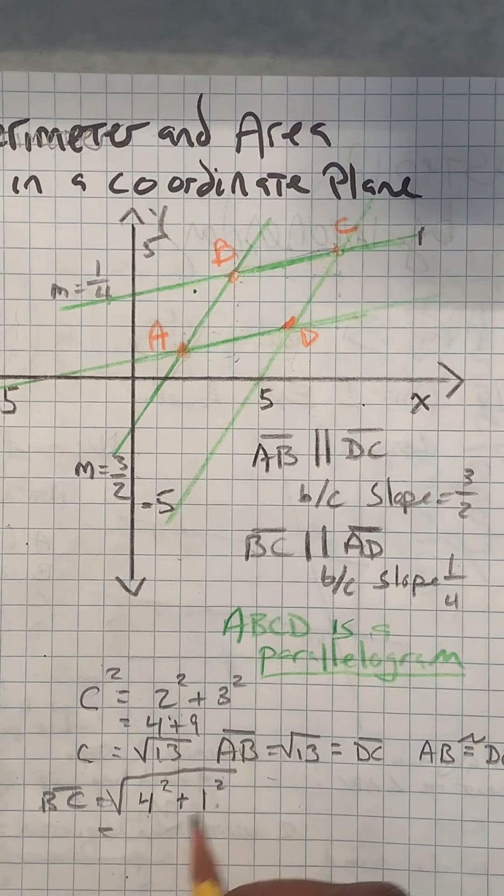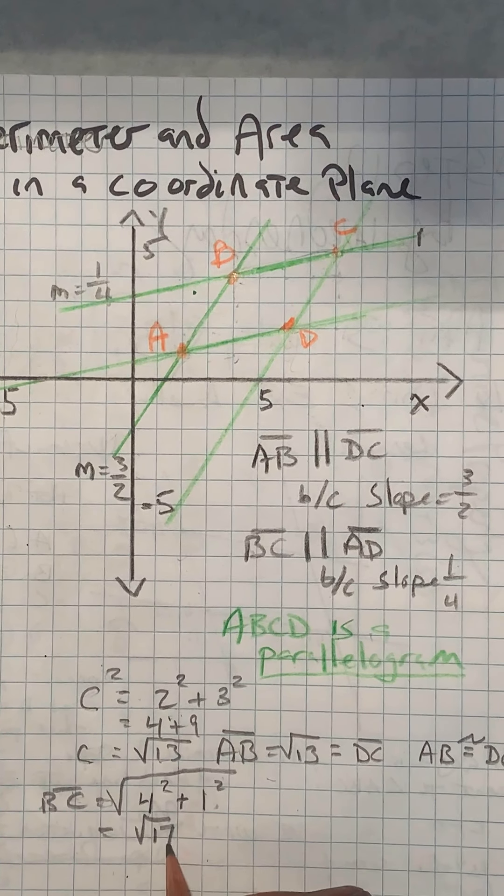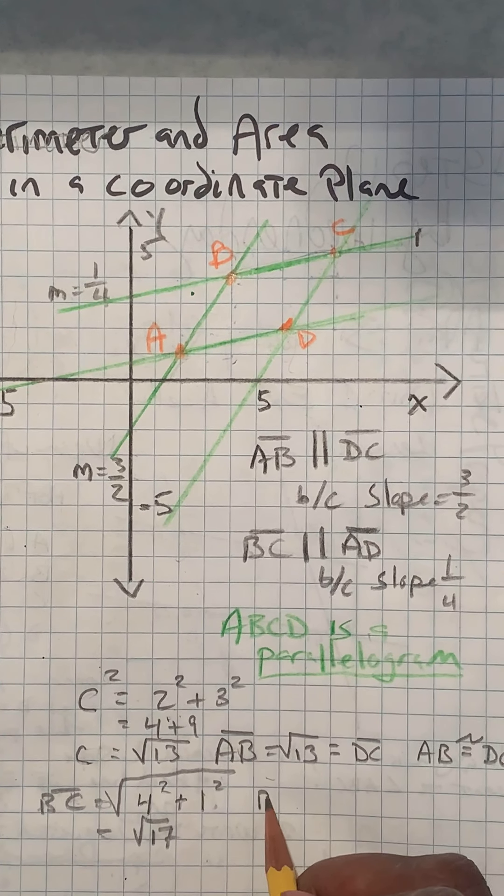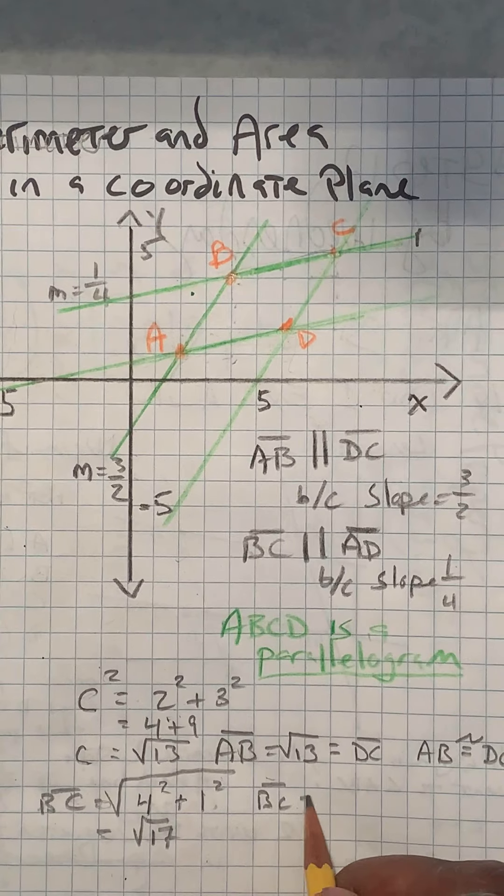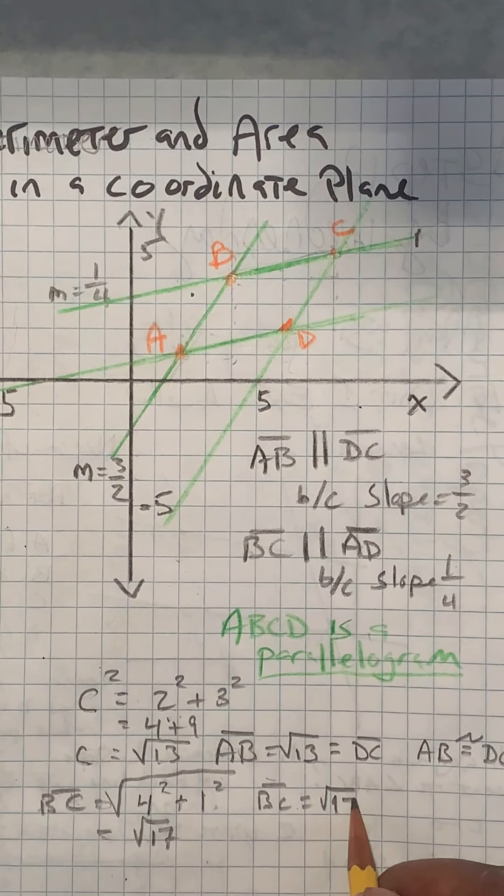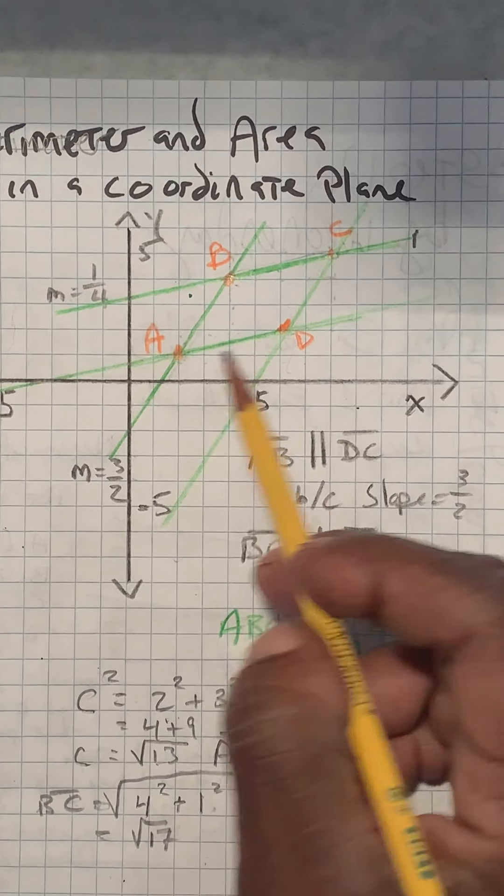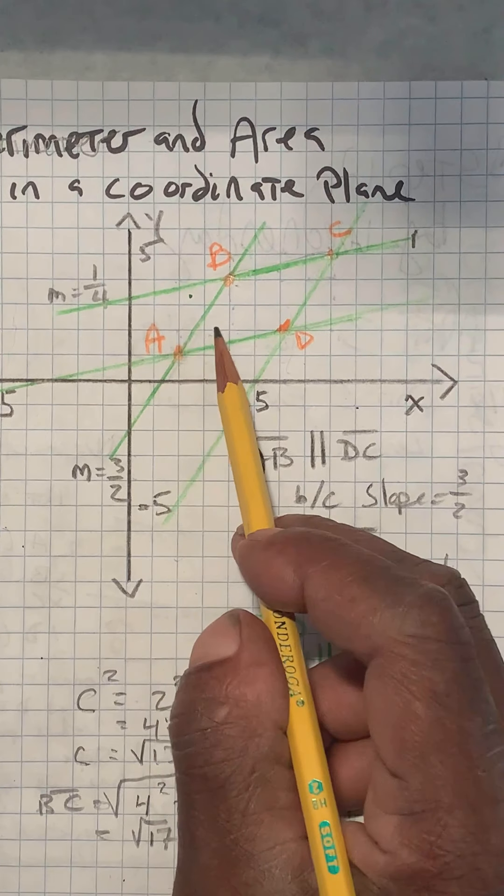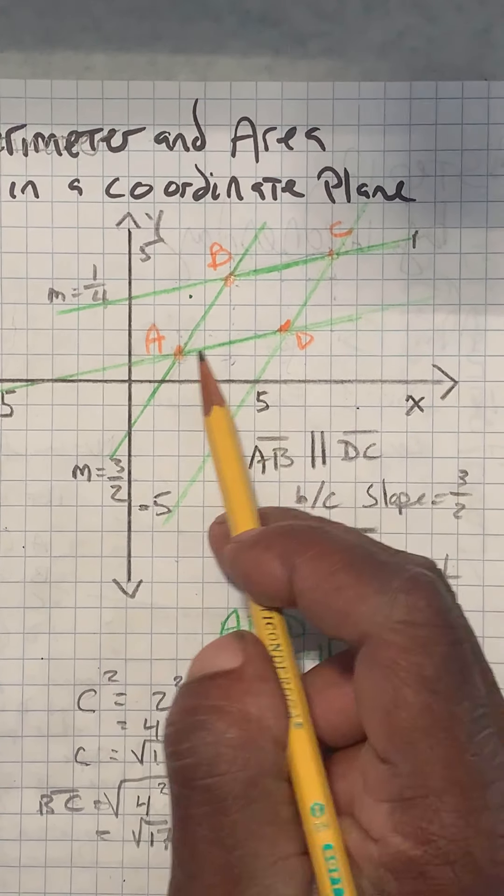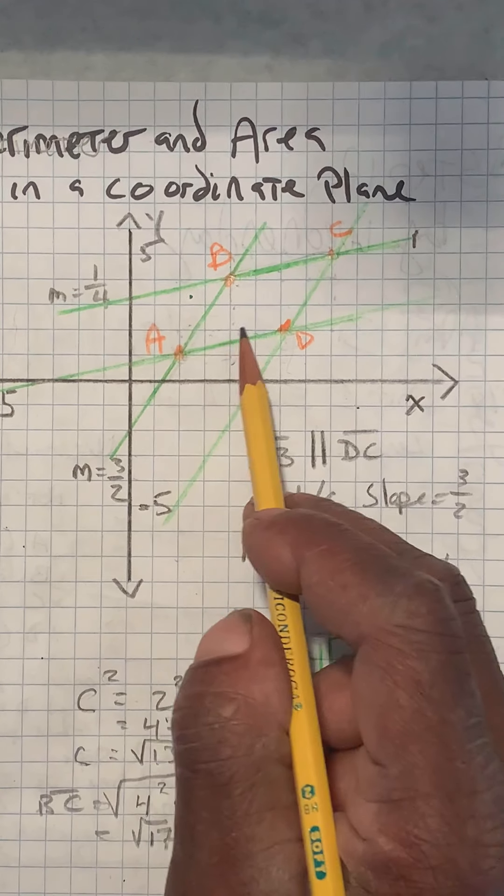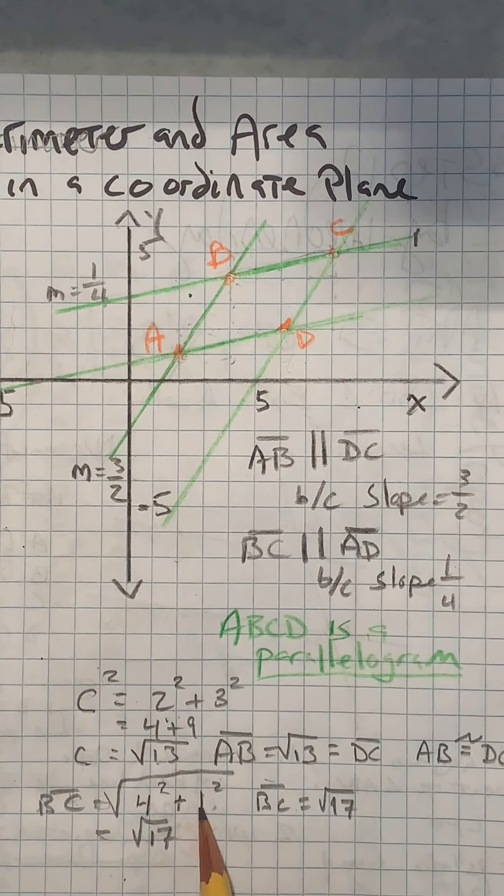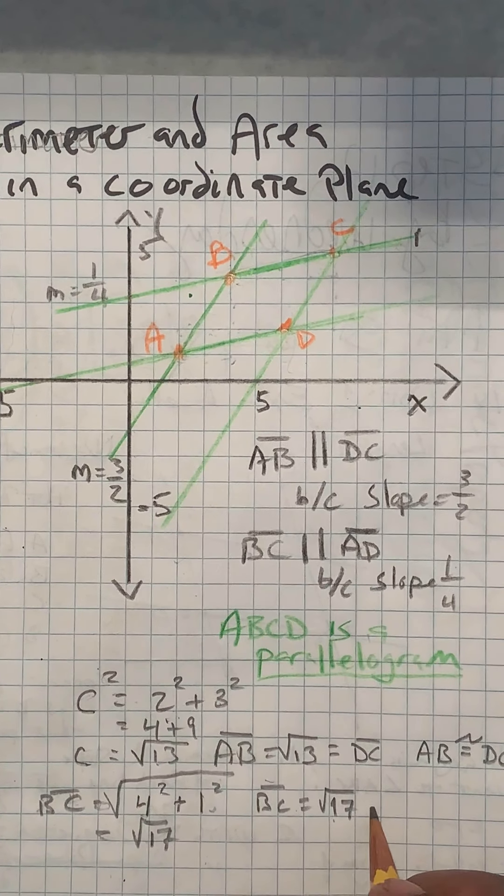So that's going to be 16 plus 1, which is square root of 17. So now we know that BC is equal to the square root of 17 units long. And we'll check AD. And you see it's also going to be 1 in the y direction and 4 in the x direction. So it's going to be the same numbers. So it's also going to be congruent.